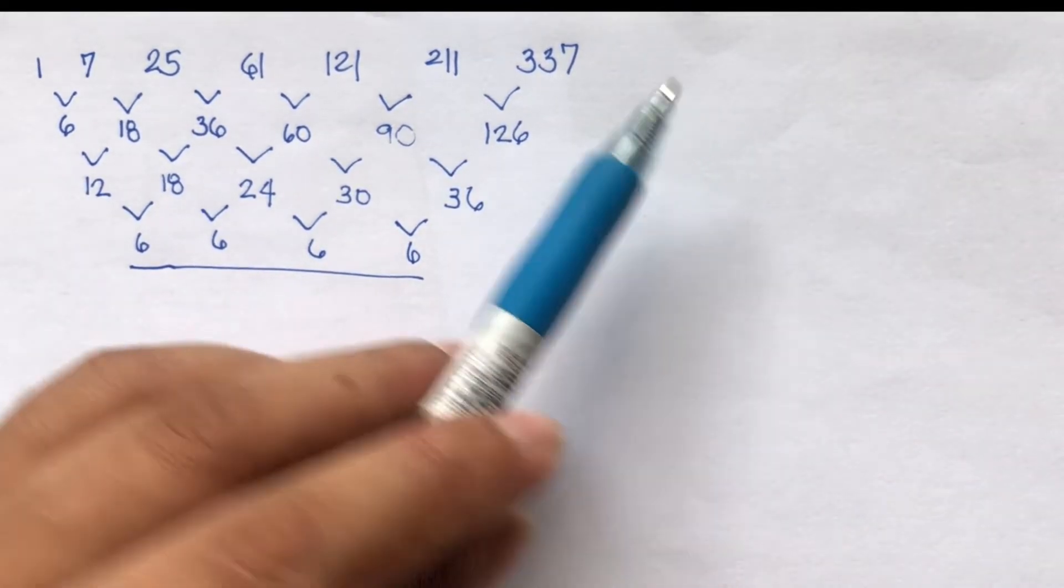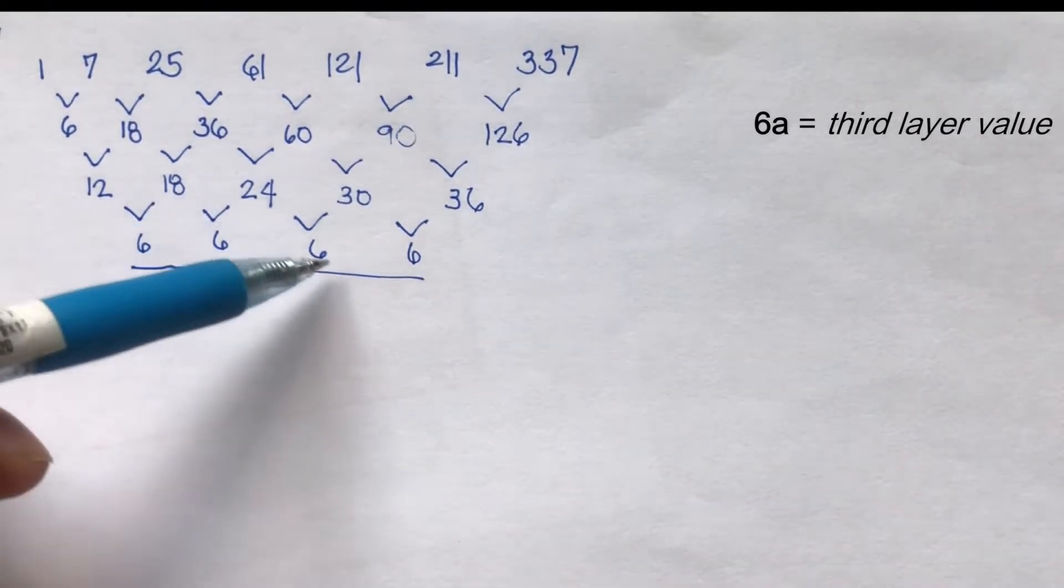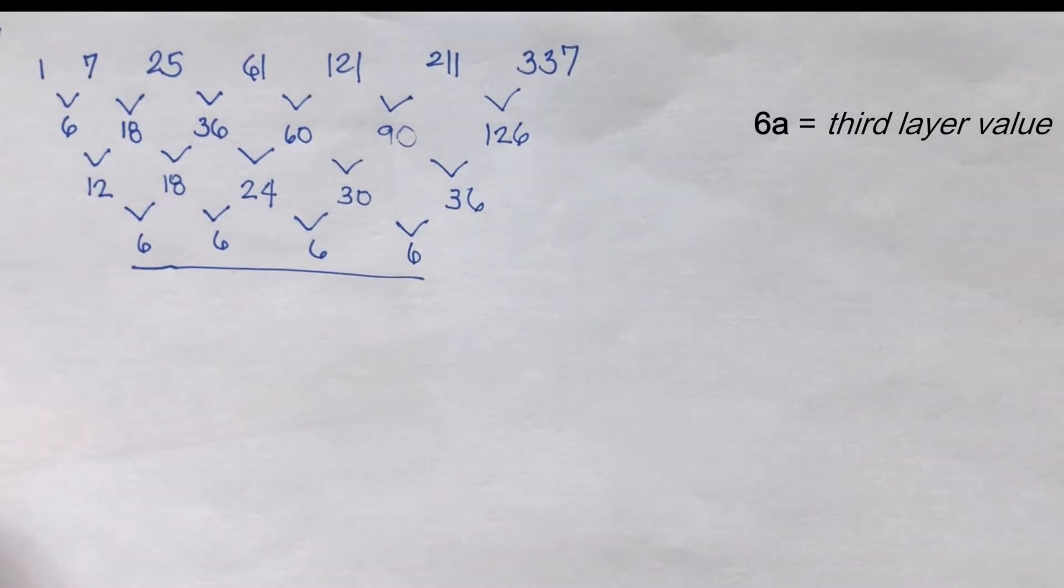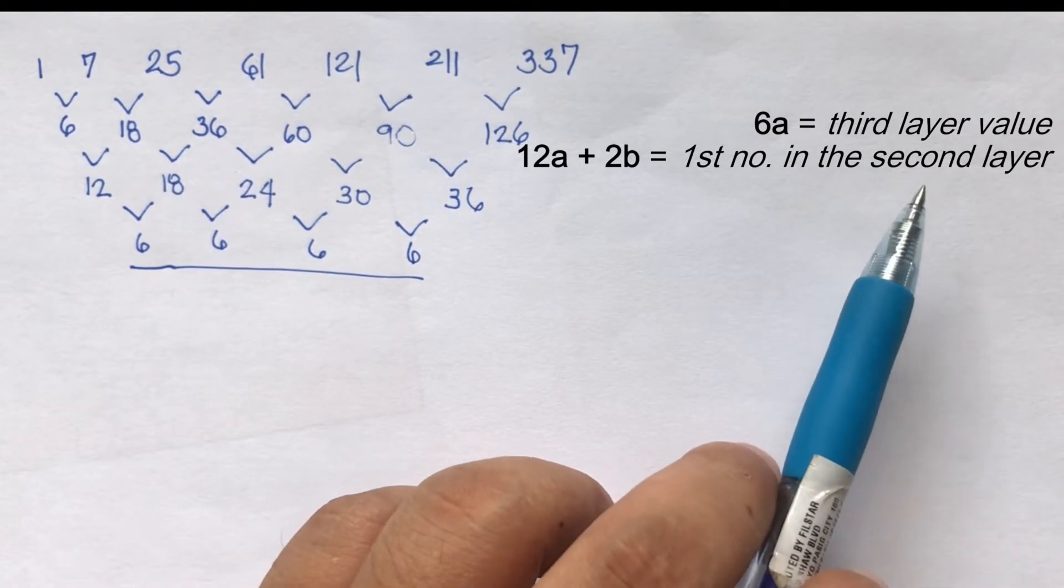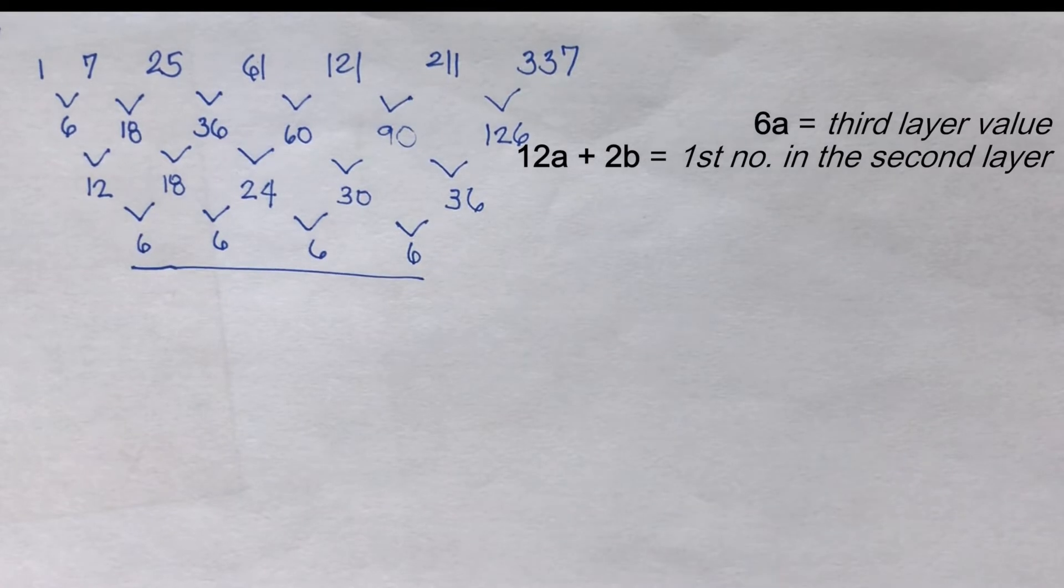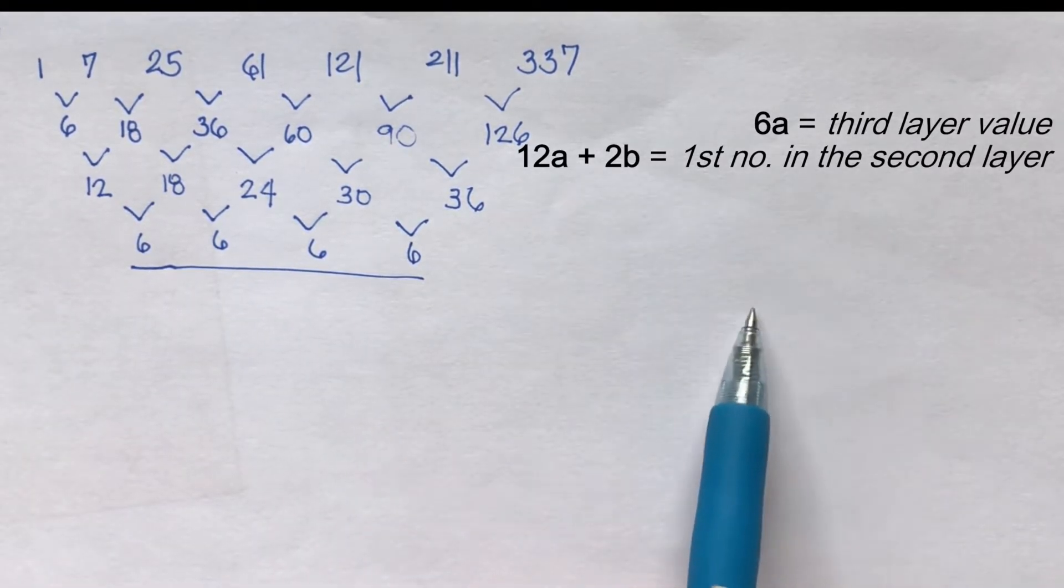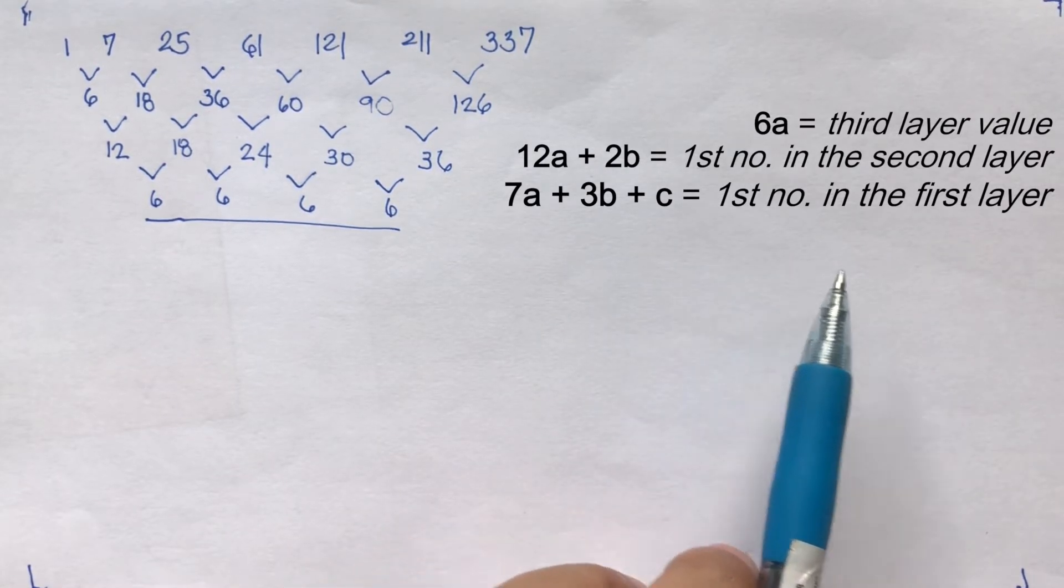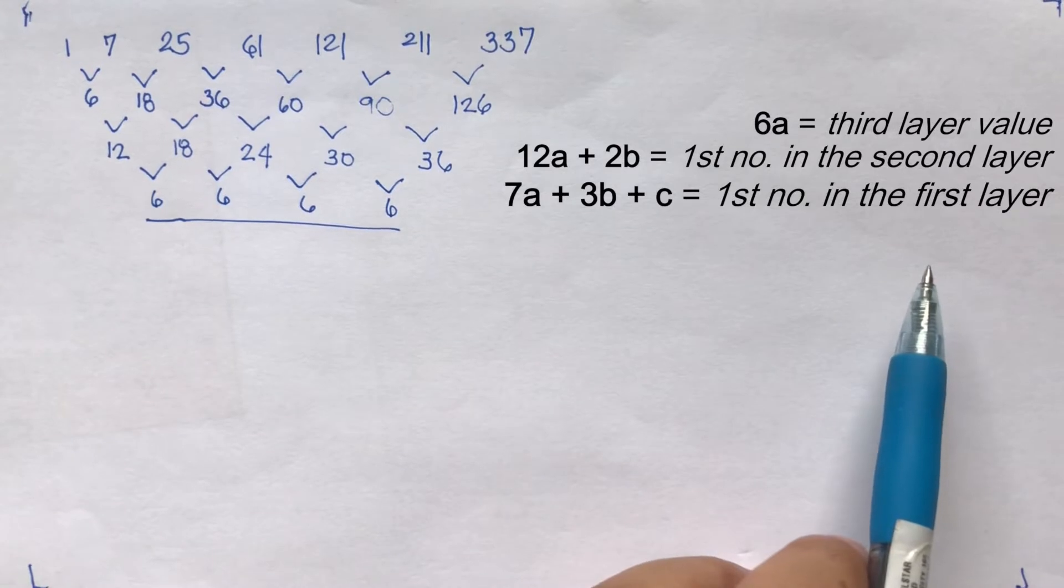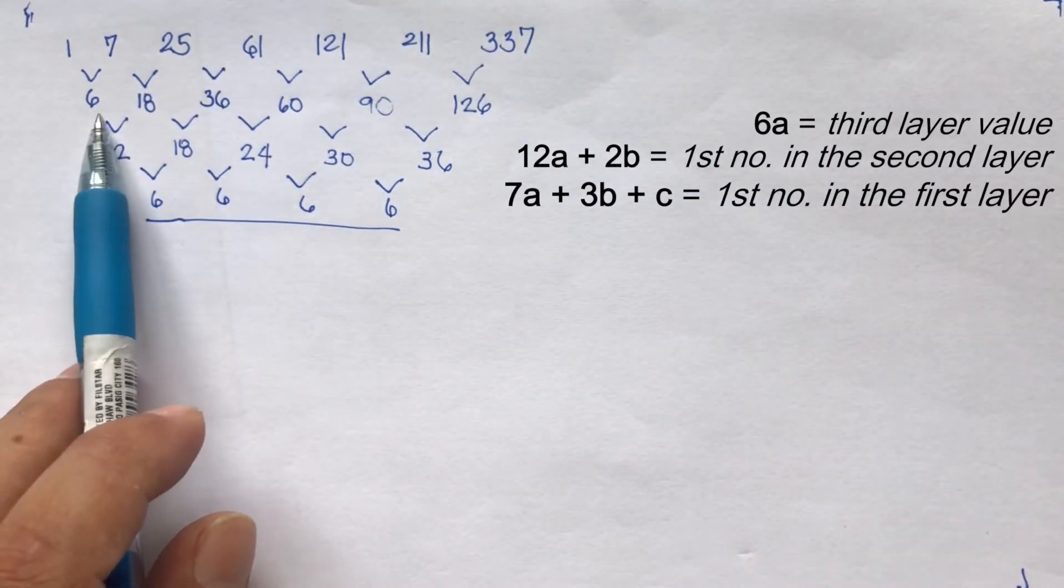The first is 6a equals the third interval, which is this one. The second formula is 12a plus 2b is equal to the first number in the second layer, which is this one. And then for the third formula, 7a plus 3b plus c is equal to the second term minus the first term, or it's this one, the first number in the first layer.